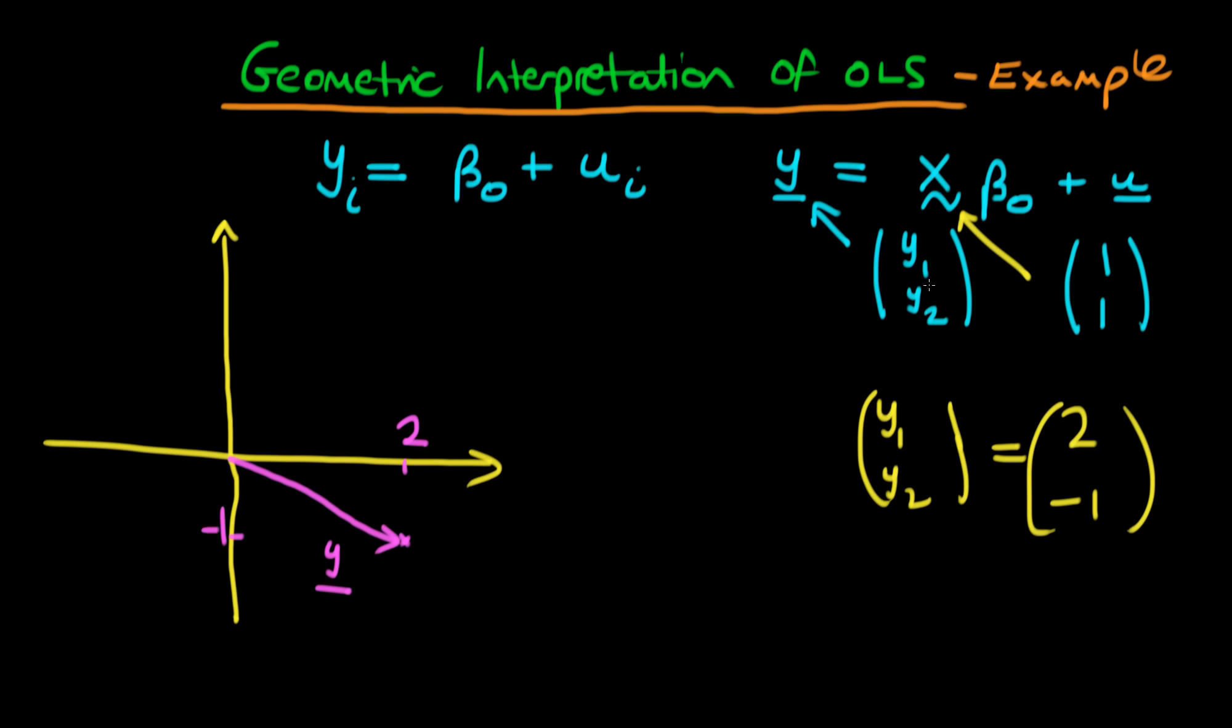So what's the space which is spanned by the independent variables in this example? Well it's just the space which is dictated by this column vector here, because we've only got one column vector. That's just a vector and it's the vector (1,1). So we can represent the vector (1,1) as just going out from the origin. If I choose a different colour, it goes out from the origin to the point 1 and 1. So it's going to look something like that.